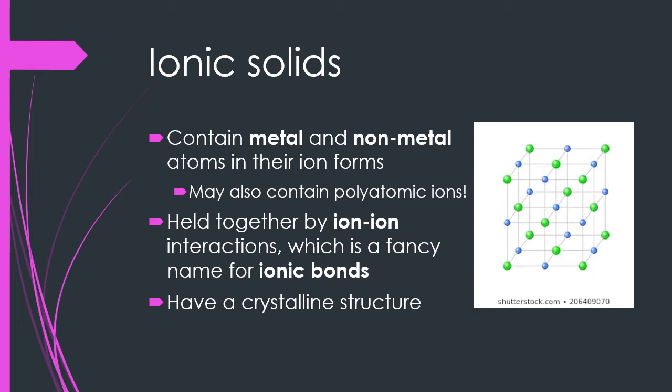Ionic solids have very crystalline structures — an example of a crystalline structure is shown on this slide. You'll notice an alternating pattern of cations and anions needed to keep the structure in place, because two cations don't want to be near each other. So generally, two cations will be separated by an anion, and vice versa.